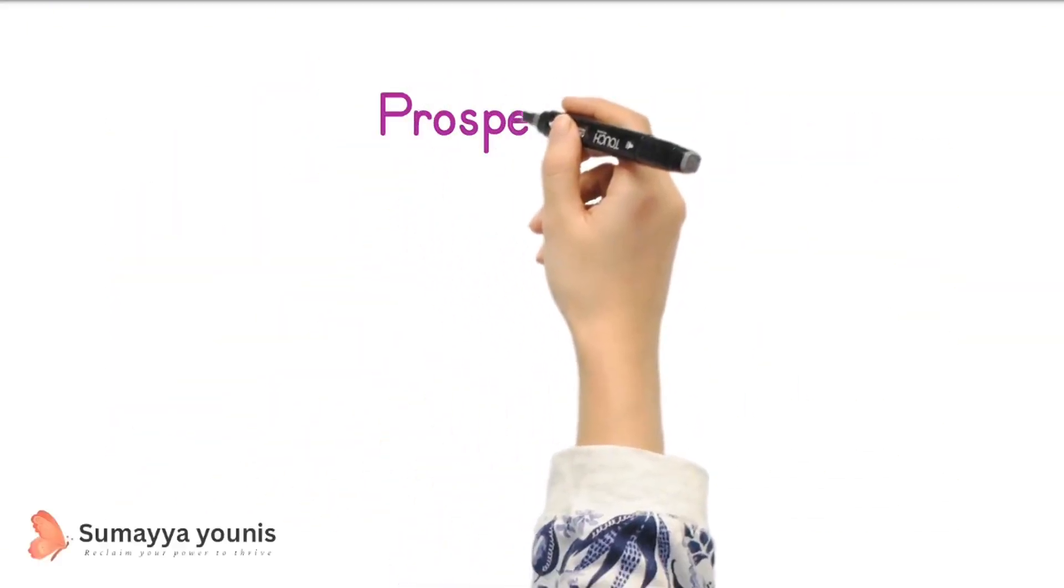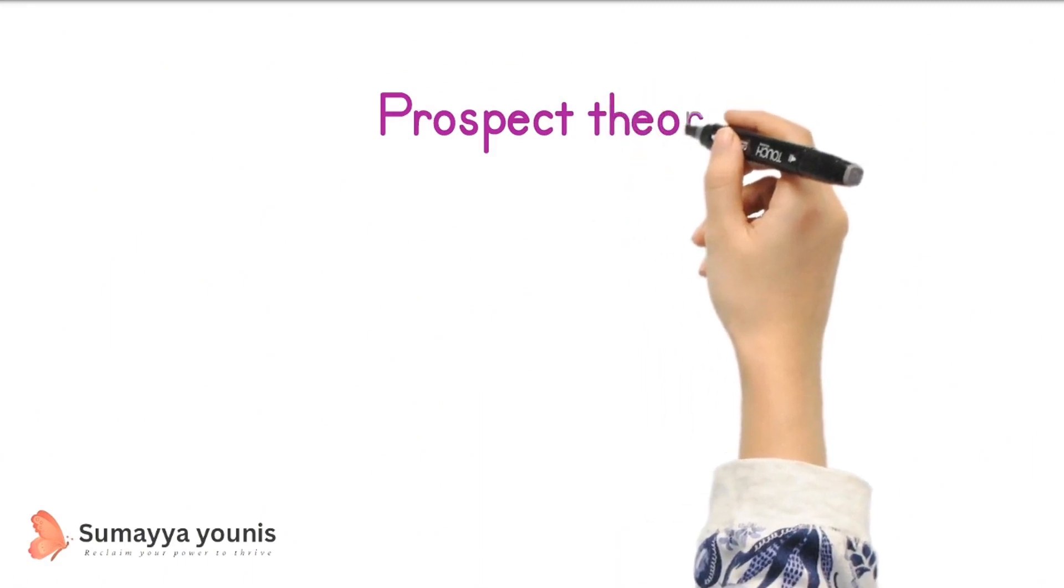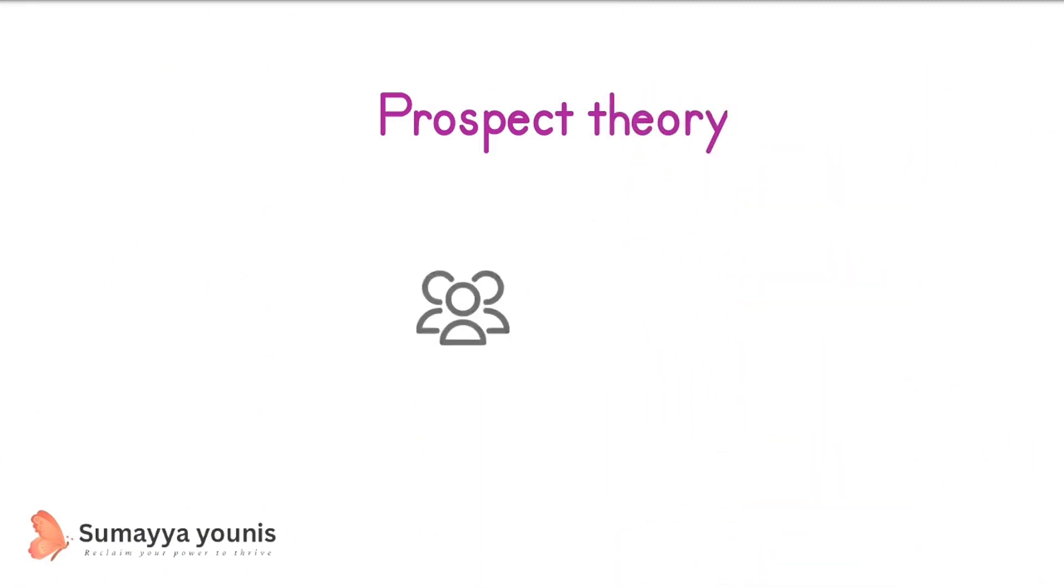Hello everyone and welcome to my channel. Today we're going to talk about prospect theory, which is discussed in the book Thinking Fast and Slow by Daniel Kahneman.